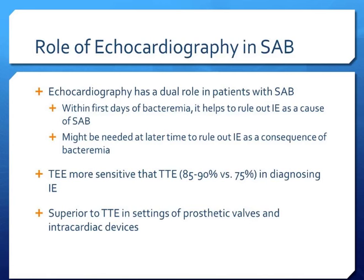Echocardiography has a dual role in patients with staph aureus bacteremia. When performed within the first days of bacteremia, it helps to rule out infective endocarditis as a cause of SAB, and it may also be needed at a later time to rule out IE as a consequence of bacteremia. TEE is a more sensitive test than TTE in diagnosing infective endocarditis, with sensitivity ranging from 85% to 90% versus 75% for transthoracic echocardiography. TEE is also superior in settings of prosthetic valves and intracardiac devices.